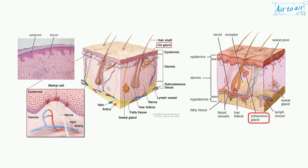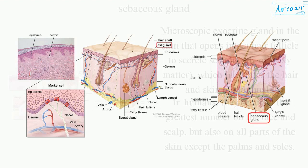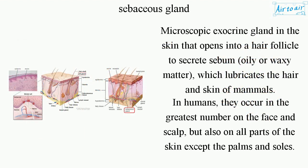Sebaceous Gland. A microscopic exocrine gland in the skin that opens into a hair follicle to secrete sebum, an oily or waxy matter, which lubricates the hair and skin of mammals.